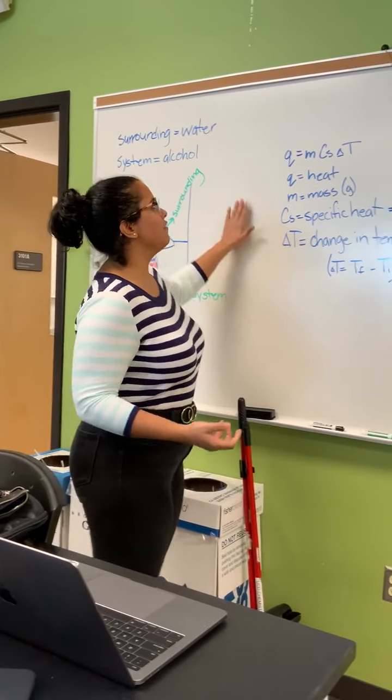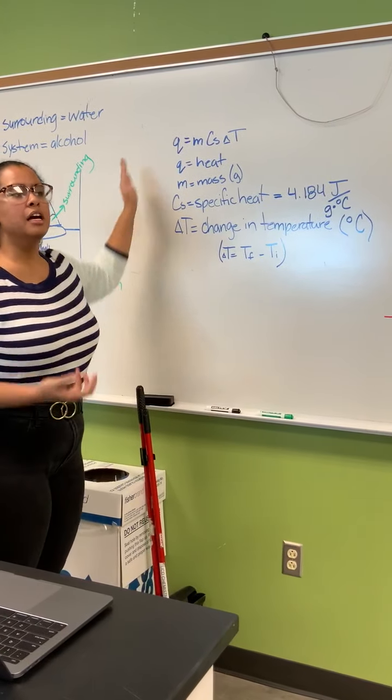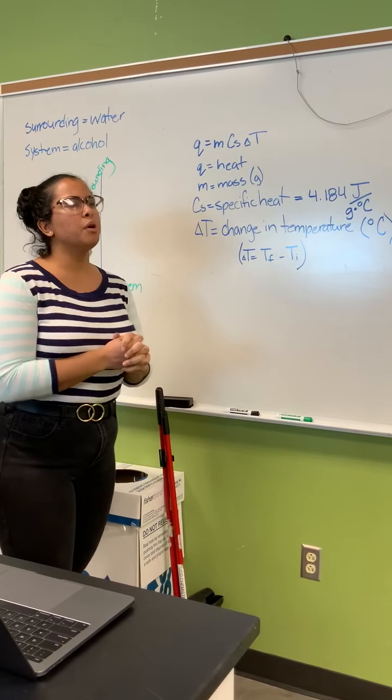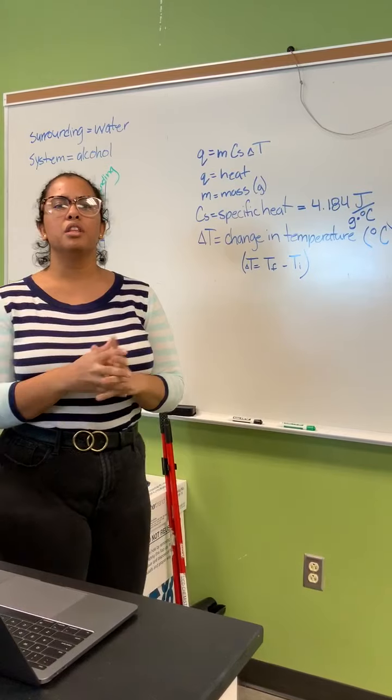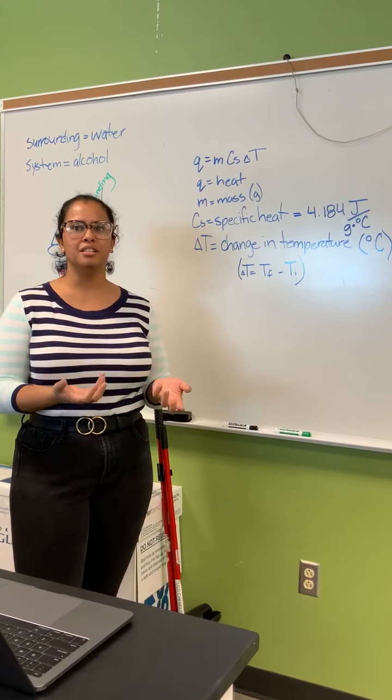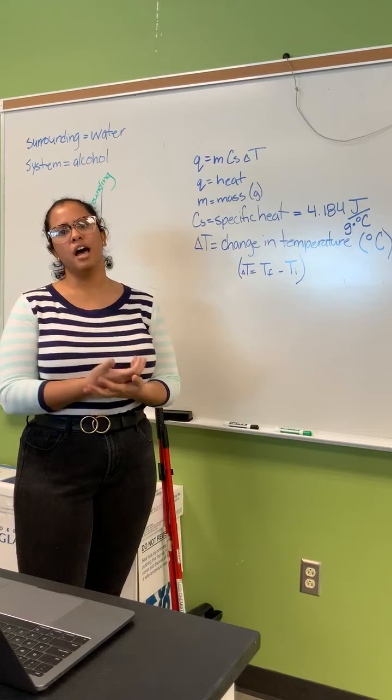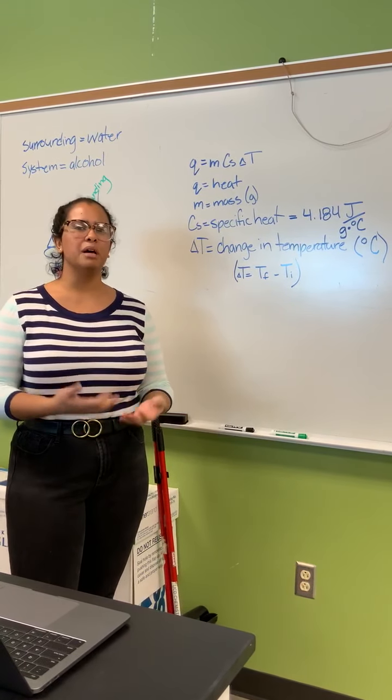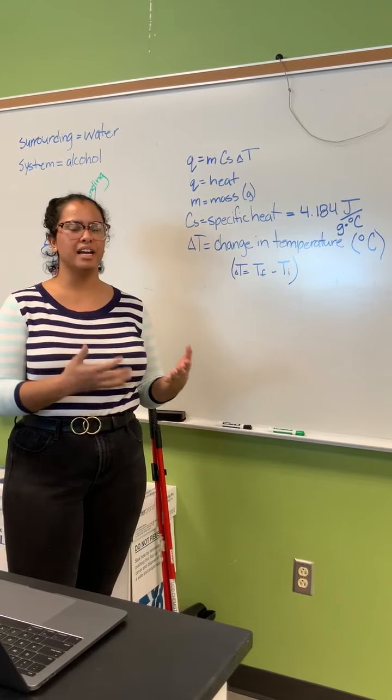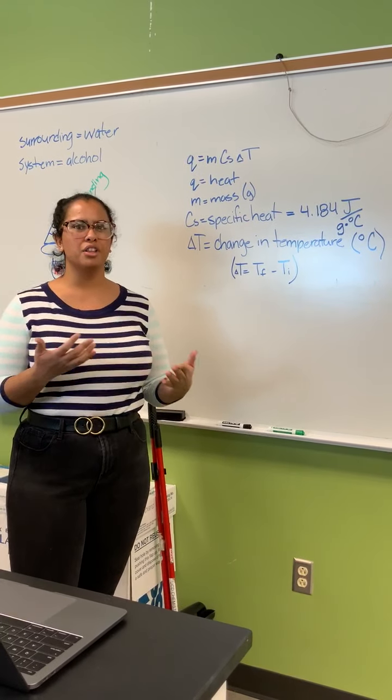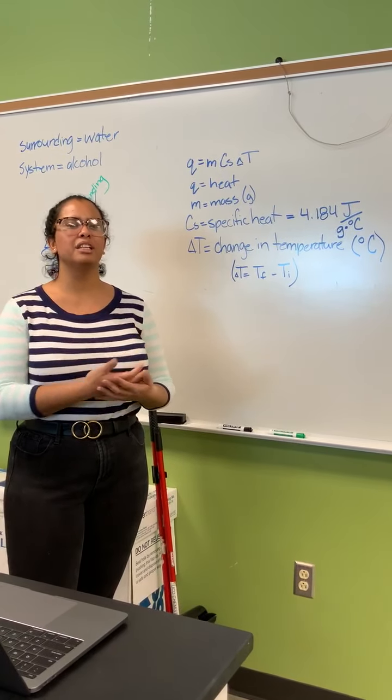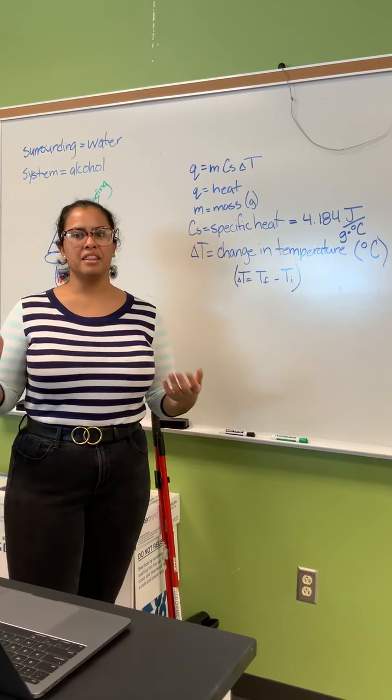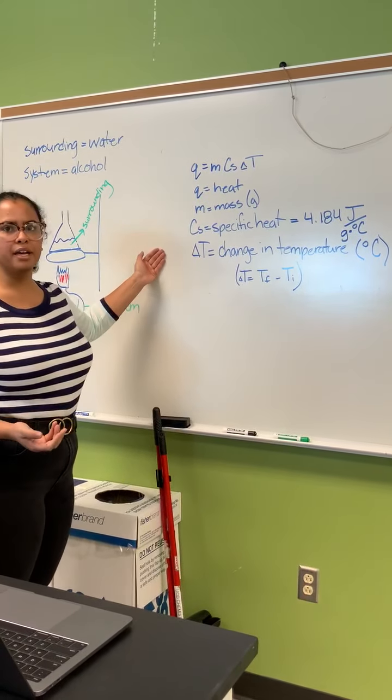So we have our formulas. What we really want to find out is the heat released from the system, or how much heat the alcohol released. But we cannot really measure that, so we try to find the heat absorbed by the water and relate it to our system, and that is done by using q equals mcΔT.